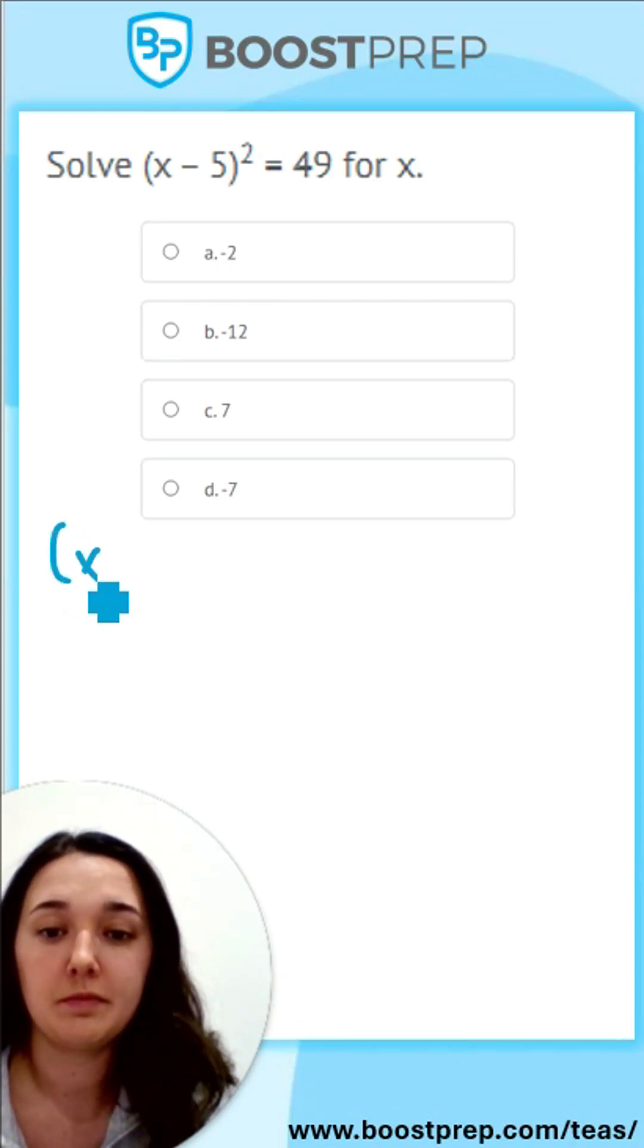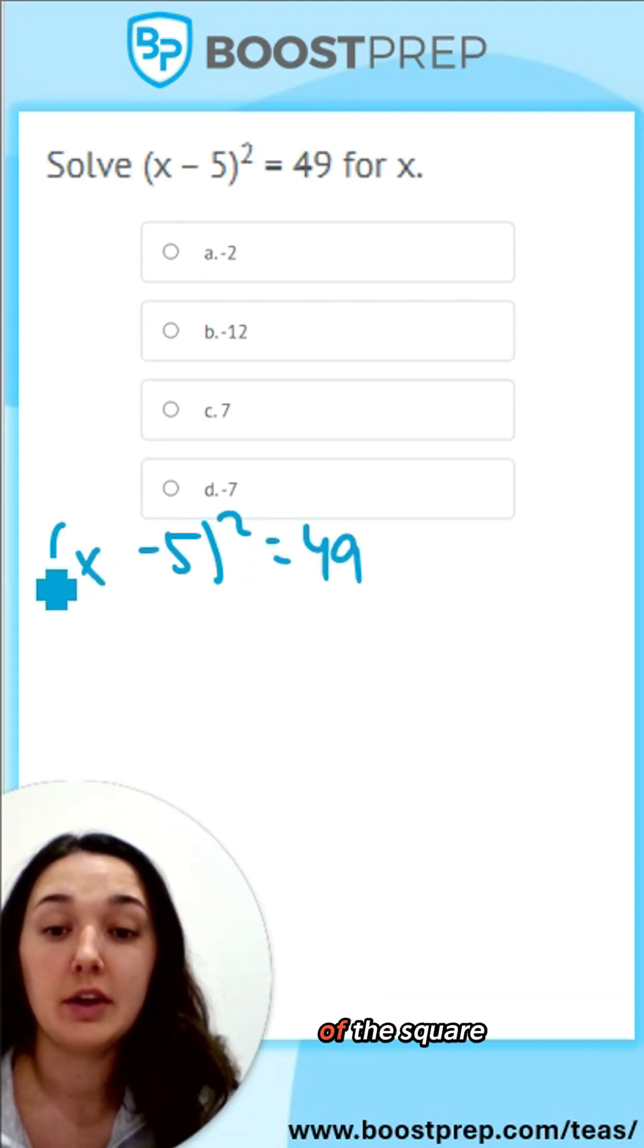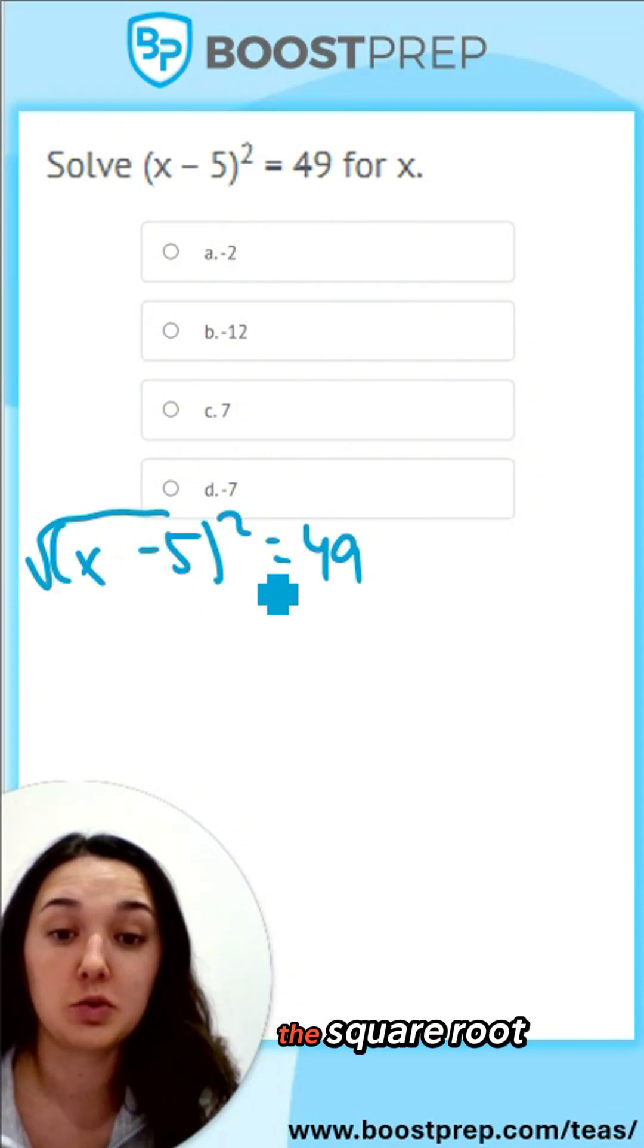So you're going to write out your equation, x minus 5 squared equals 49. To get rid of the square, you want to take the square root of both sides.